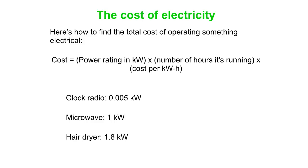So if you've got your clock radio running 24 hours a day, it doesn't actually cost you a lot because the power rating in kilowatts is not that much. Your microwave draws much more power, but of course it's not on 24 hours a day. So you can figure out what costs you the most to run in your house.